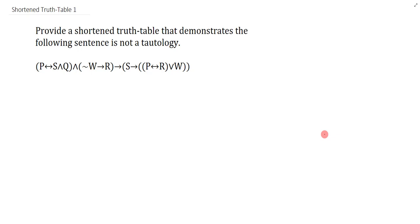This is a trickier shortened truth table that we're going to look at. It's tricky just in the initial setup and then it plays out just like a regular shortened truth table. What this is asking is to demonstrate that the following sentence is not a tautology. You can see that this is just one massive sentence and the letters here are P, Q, R, S, W.